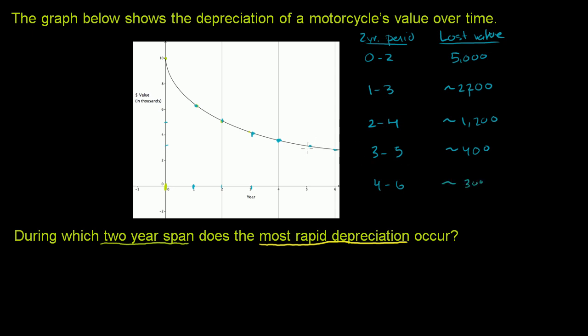It's shallower than it was before. So the most rapid depreciation occurs in the first two years. And you didn't have to go through this exercise. You could have just looked at the chart and said, hey, look how steep it is this first two years compared to all of the years after that.